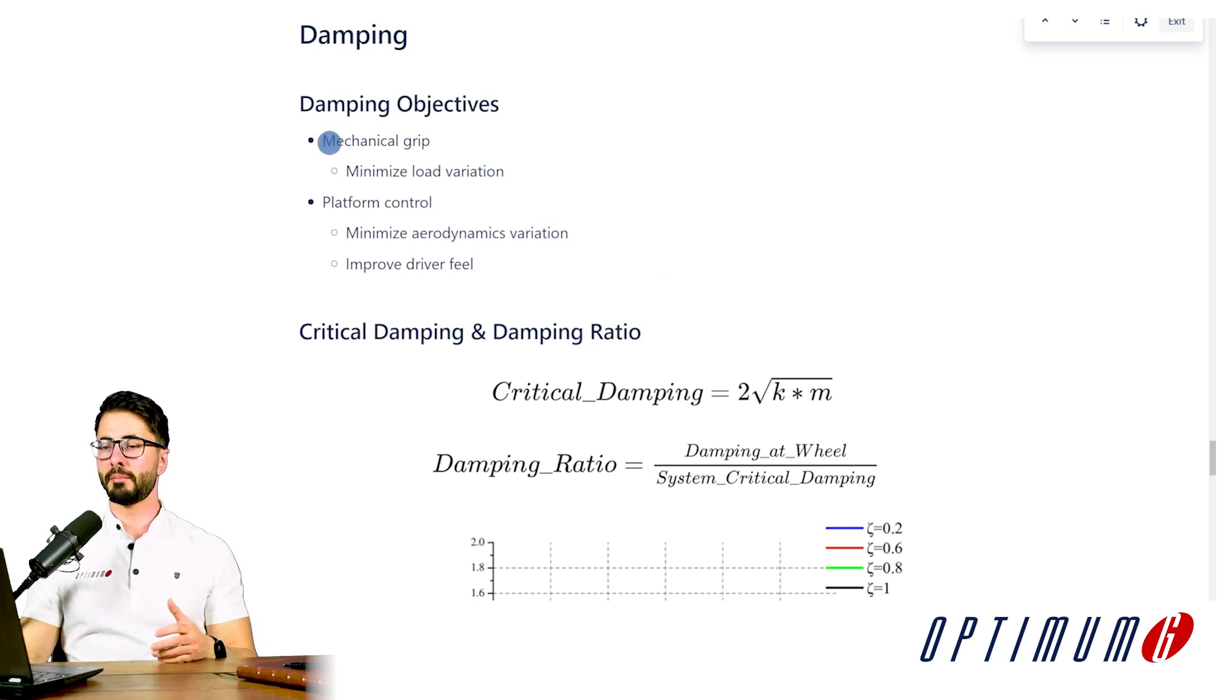Well the first one is to maximize mechanical grip. If we want to optimize grip we need to reduce the amount of load variation, basically how much the car is jumping over bumps and over curbs. For that we minimize load variation and we need to find an appropriate damping to achieve that.